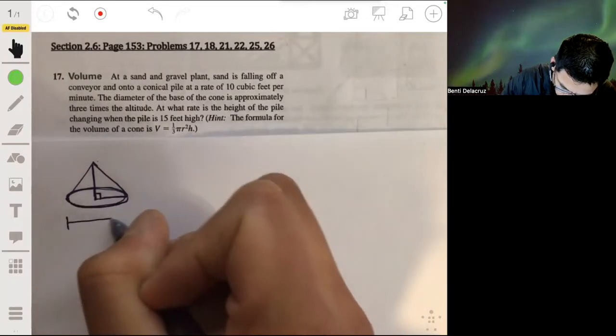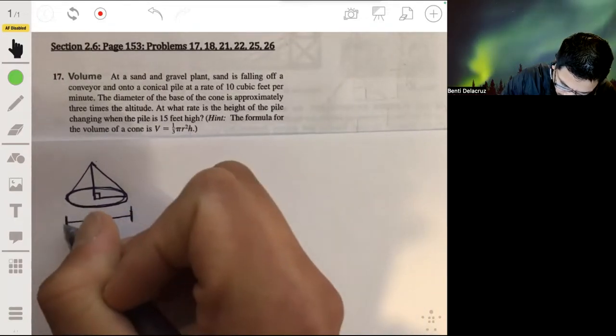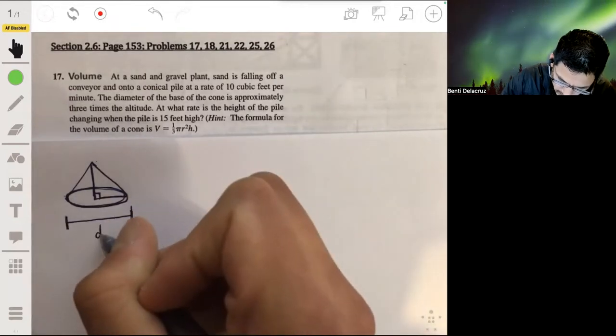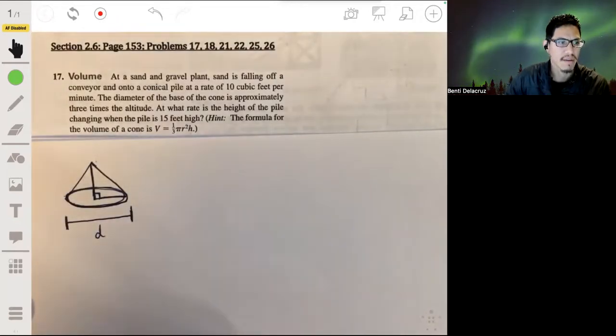So we'll say this is the value from here to here. That's called d, that's the length of the diameter of the base.